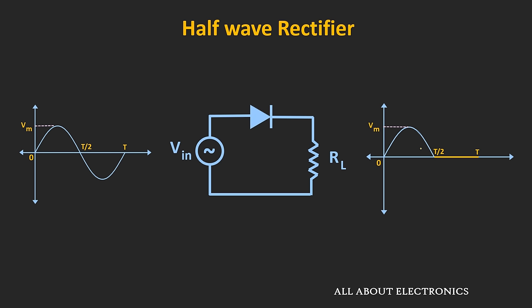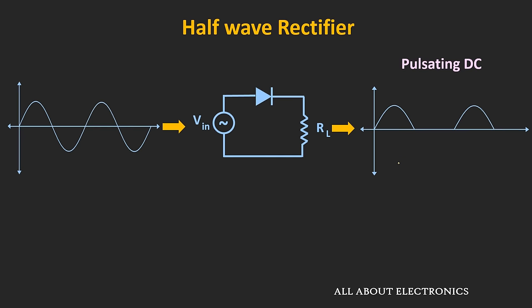Now during the negative half cycle, the voltage which appears across the anode and cathode will be negative. So this diode will get reverse biased and will simply act as an open switch. There will not be any flow of current through the circuit, and at the output we will get zero voltage. So during the negative half cycle, we will get zero voltage. And in this way, whenever the continuous sine wave is applied as an input to this rectifier, at the output we will get either positive or negative pulse trains.